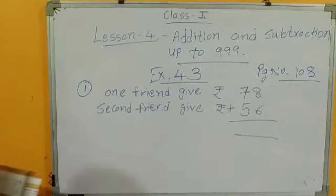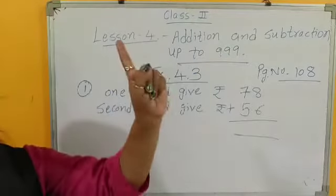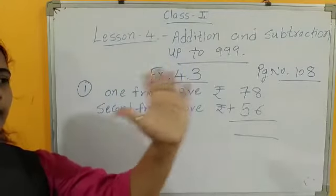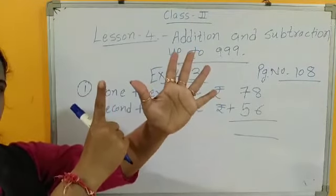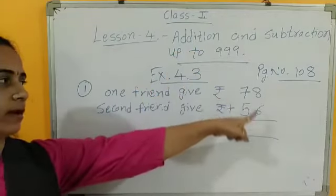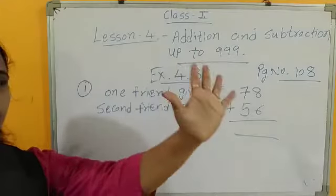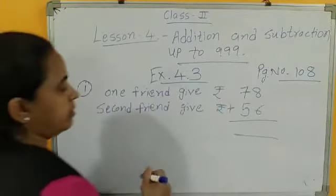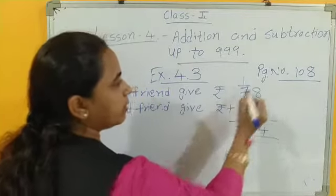So first 8 plus 6. After 8, count number 6. After 8, count 6. So 9, 10, 11, 12, 13, 14. Yes. These 6 fingers. So after 8, count 6: 9, 10, 11, 12, 13, 14. So 14, 1 for 14. So 4 is here, 1 carry forward.